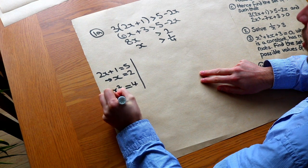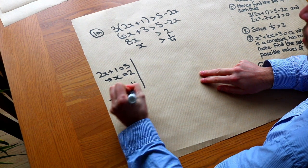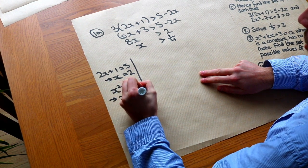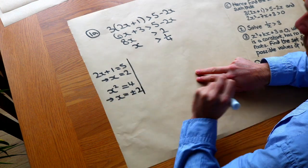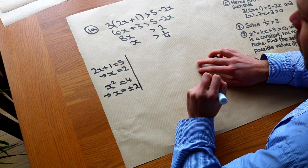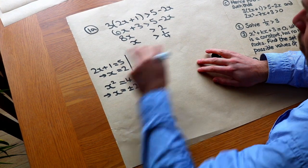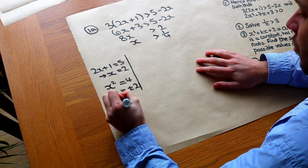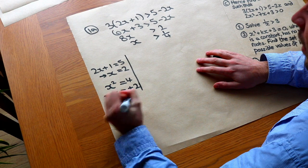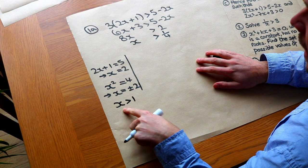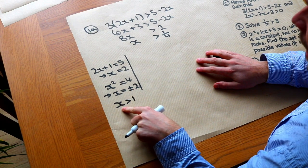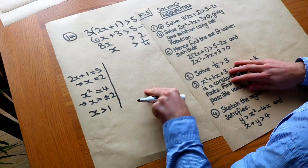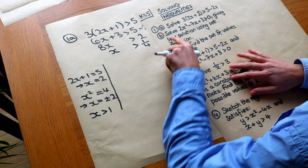Let's quickly reflect on what an inequality means. With an equation like 2x + 1 = 5, there's only one solution: x = 2. For x² = 4 we get two solutions: x = ±2. But with an inequality like x > 1, x can be any value greater than 1 - infinitely many solutions. Now let's do 1B.